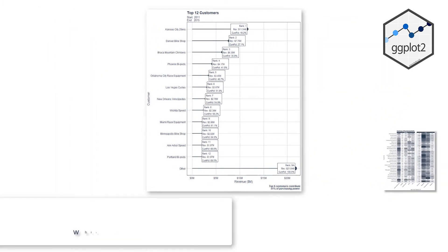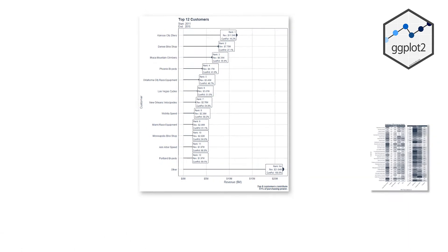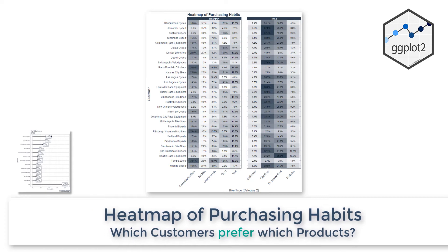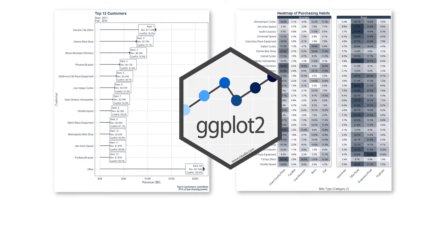The first Advanced Plot shows the top-end customers, answering the question of which customers have the most purchasing power. The second Advanced Plot shows a heat map of customer purchasing trends, answering the question of which customers prefer which products.